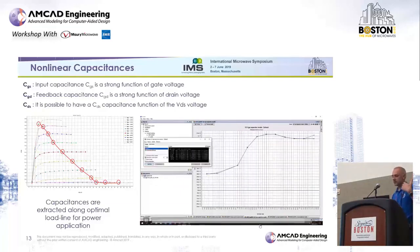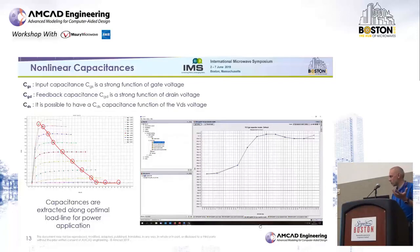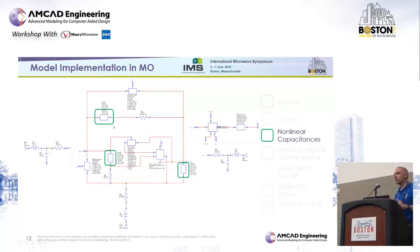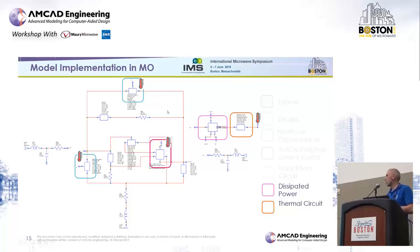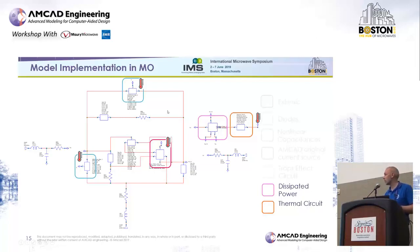Once we complete the nonlinear capacitance and current source modeling, we have a model valid for a given temperature — but it is not yet an electrothermal model. We need to add a new variable: temperature. We add two circuits: a dissipated power model and an equivalent thermal circuit. These two circuits are driven by the dissipated power, and the output is the temperature. This temperature parameter is then used in the nonlinear current source and in the diodes, and optionally in the nonlinear capacitance model.